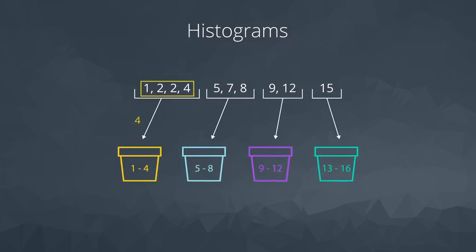Because these first four values are between 1 and 4, they go into the first bin. These next three values are between 5 and 8, so they fall in the next bin.